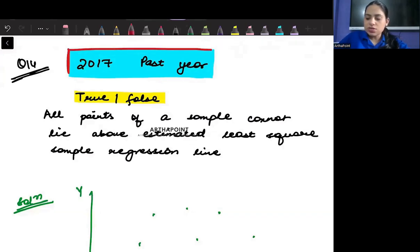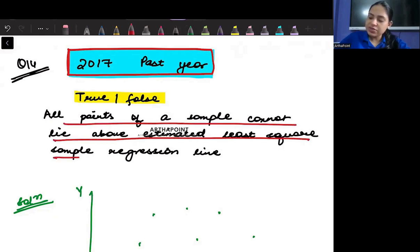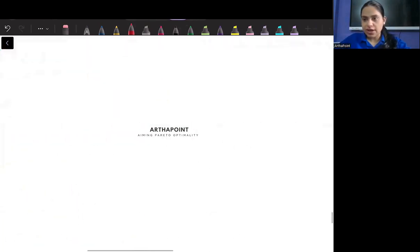This question came in 2017 past year paper of Econometrics. So try to look into this question. This is a true false statement. And what's the question saying? It says all points of a sample cannot lie above the estimated least square sample regression. This is a very interesting question, actually, to ask.